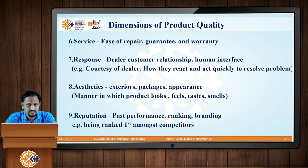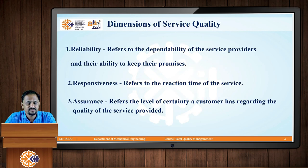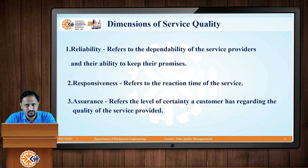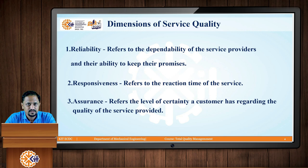These were the dimensions of product quality. Now let us discuss the dimensions of service quality. If you are offering any service to your customer, there are specific dimensions. The first is reliability, which refers to the dependability of the service providers and their ability to keep their promises — whatever promises you make, you should be able to keep them while providing the service. The next dimension is responsiveness — the reaction time of the service, how quickly you are providing it.